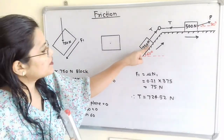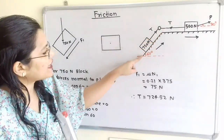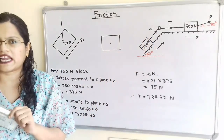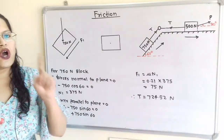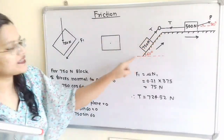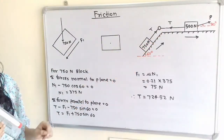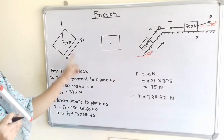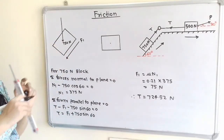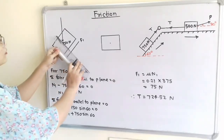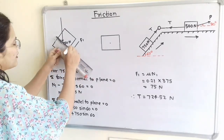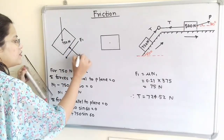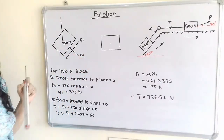The surface of the block is in contact with the fixed inclined surface, so there is a normal reaction. This reaction is always perpendicular to the fixed surface and its direction is towards the block, also passing through the center of the block. We draw a perpendicular line to the inclined surface and show normal reaction N1.